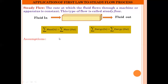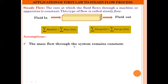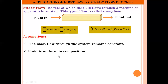The assumptions are as follows. The first assumption is that the mass flow through the system should remain constant — the amount of mass entering into the system should be equal to the amount of mass leaving out of the system. The second assumption is that the fluid is uniform in composition, meaning there should be no suspended particles that affect the fluid flow movement from one location to another.